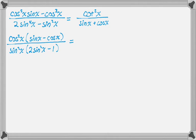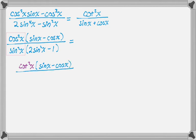Looking at the new left-hand side, I actually have cosine squared over sine squared, which is exactly cotangent squared — that's really good. That means I'm making progress, because the right-hand side has cotangent squared. So I have cotangent squared times sine minus cosine, all over 2 sine squared minus 1.